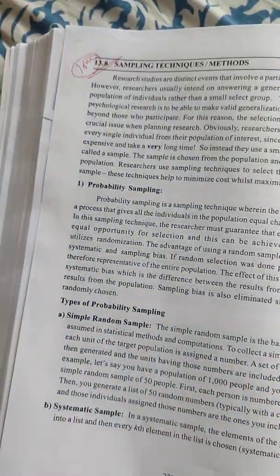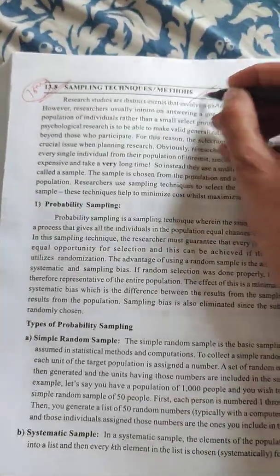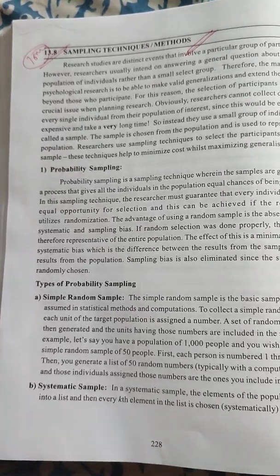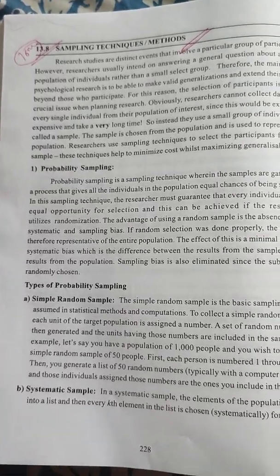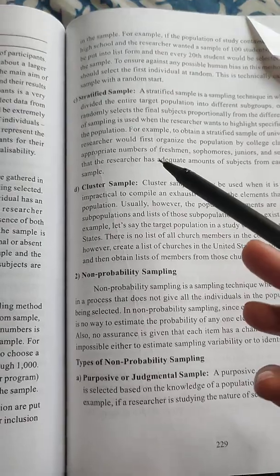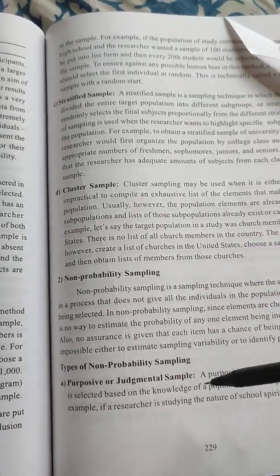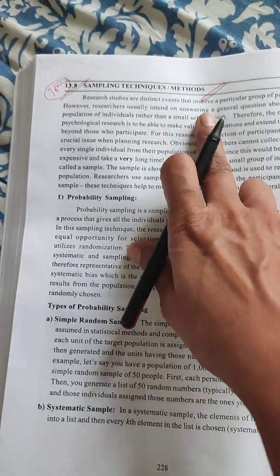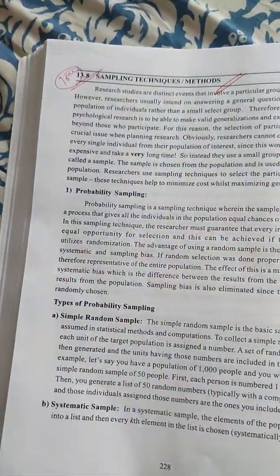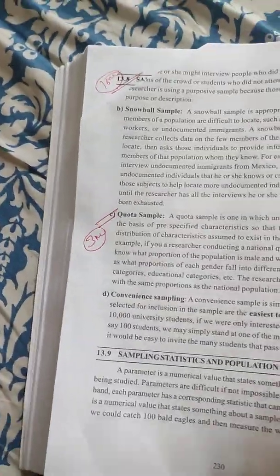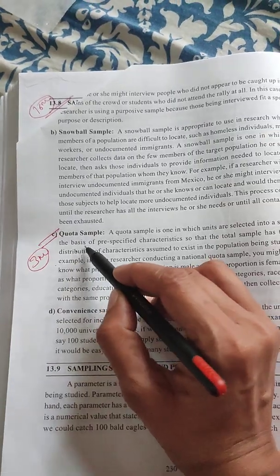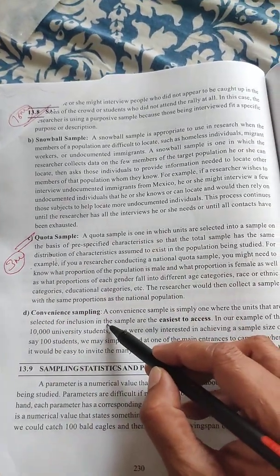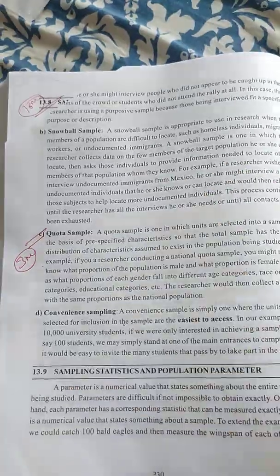Sampling techniques or methods include: cluster sampling, probability sampling, simple random sampling, systematic sampling, and stratified sampling. For types of non-probability sampling, these include: quota sampling, convenience sampling, and snowball sampling.